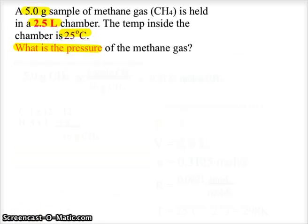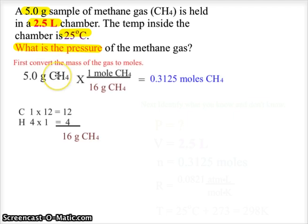So here we have a sample problem: 5 grams of methane, CH4, is held in a 2.5 liter chamber. The temp inside the chamber is 25 degrees Celsius and we're going to look for the pressure of the methane gas. The first thing we're going to do is convert the mass of the methane to moles because we need a mole value for the n. The mass of methane is 16, so that 5 grams of methane becomes 0.3125 moles of methane.